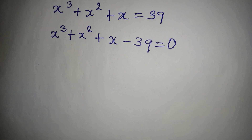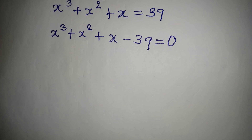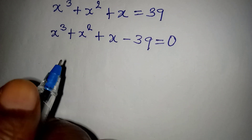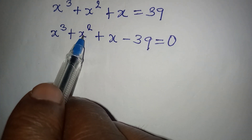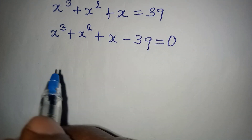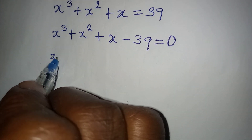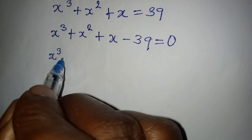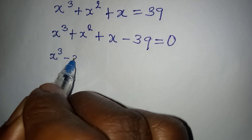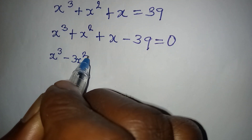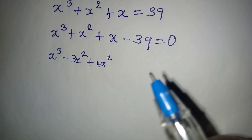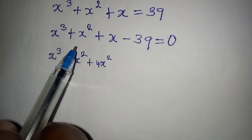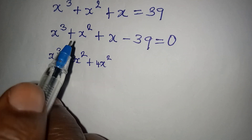Because this is difficult to factorize as-is, we're going to do a couple of manipulations. The x² term I'm going to break into two: I'll write x³ minus 3x² plus 4x², because combining those gives back the original x² term.